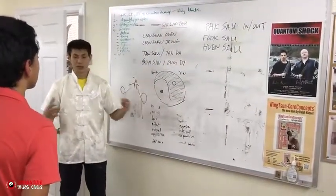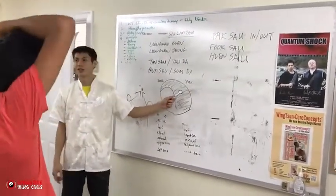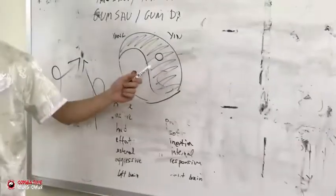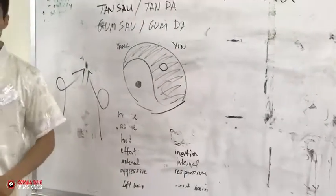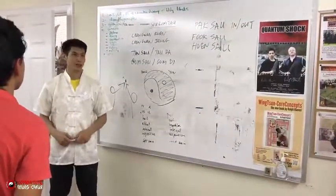You never have, in reality or in the world, if something is completely 100% one side, what happens? Disaster. Basically, it means death. That's why there's a part of the Yang in the Yin, and there's a part of the Yin in the Yang.